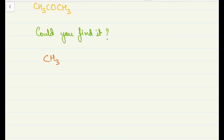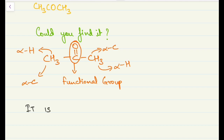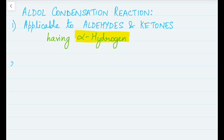In CH₃COCH₃, the C=O is the functional group, also called carbonyl. There are two carbons directly attached to the functional group, so they both become alpha carbons, and the hydrogens attached to these alpha carbons become alpha hydrogens. It's that simple. Now let's move back to the aldol condensation reaction.